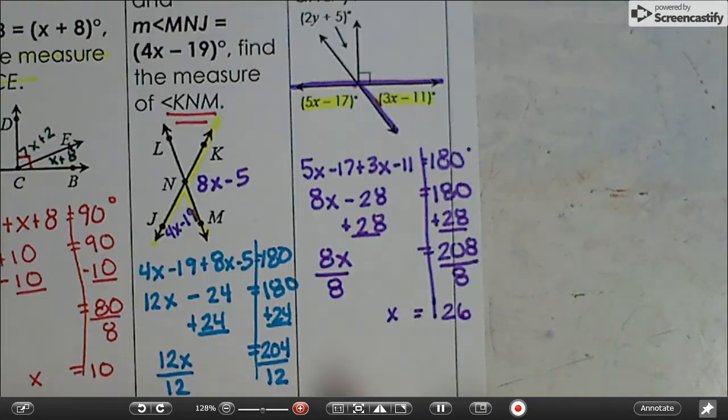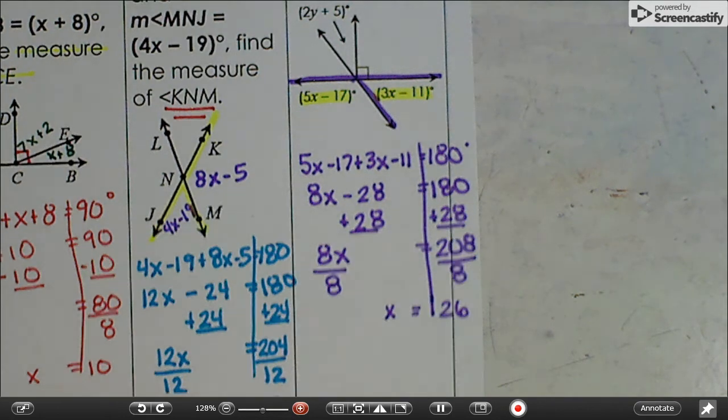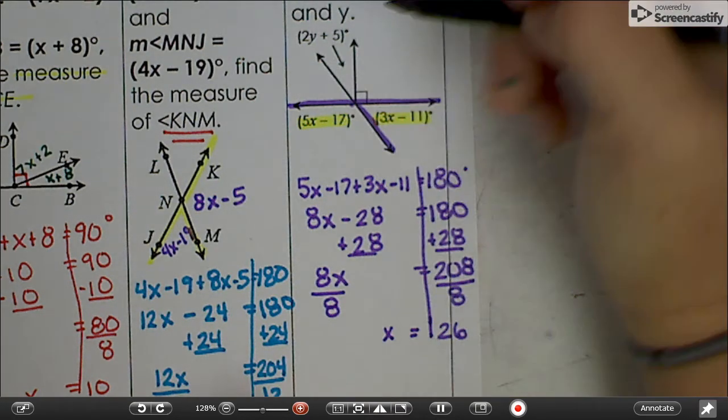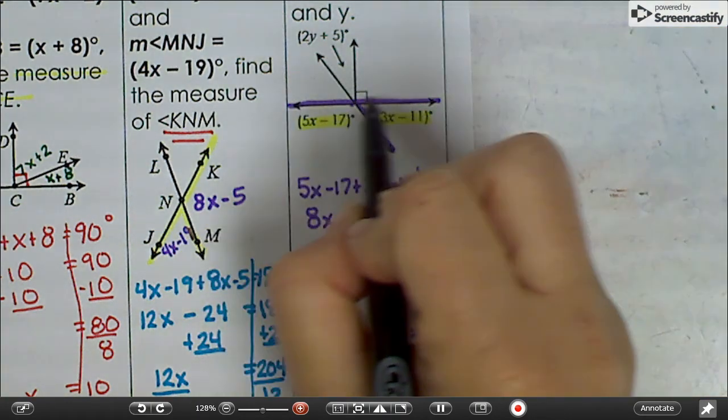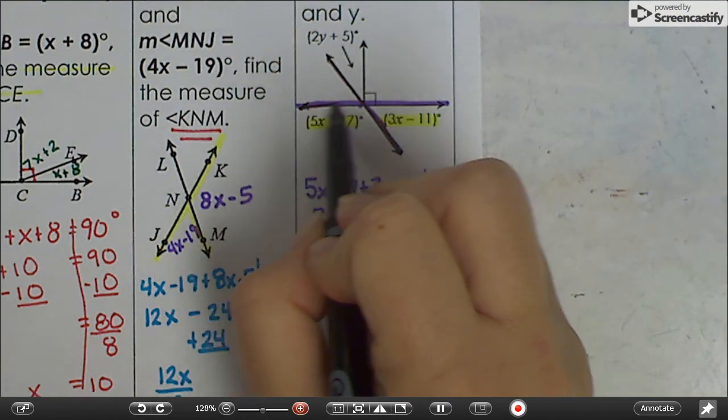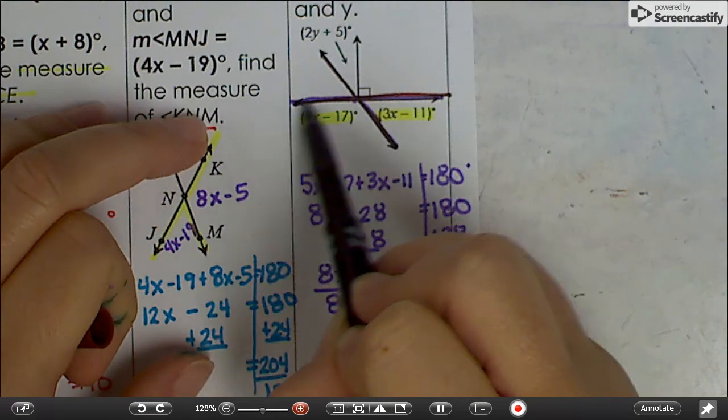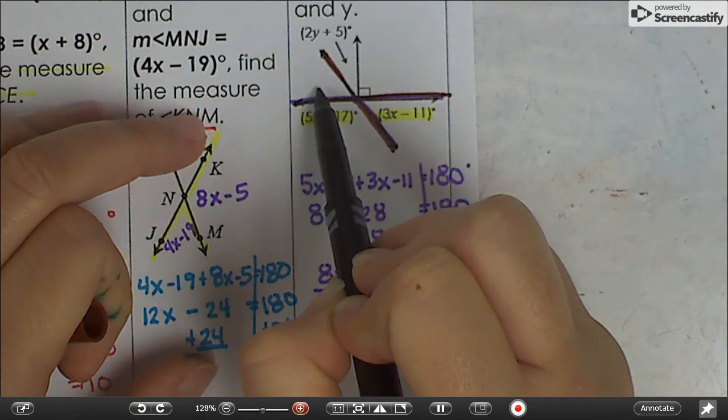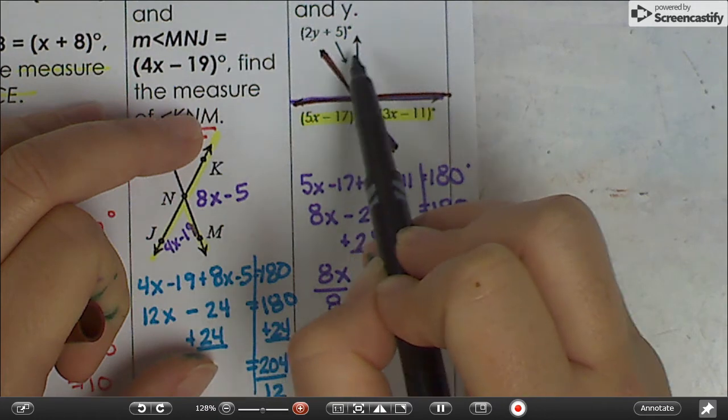So now we have x, but we need to find what those angles equal. I'm going to decide which one to plug it into by looking at my diagram. Right here we have a straight line, and right here we have a straight line. Let me color over those so you can see what I'm talking about. A lot of people would like to say that this angle and this angle are vertical, but they're not actually formed by two lines crossing, so that won't work. But this one is vertical to this one right here. So we can use that, or we can use the fact that these three angles will add up to 180.